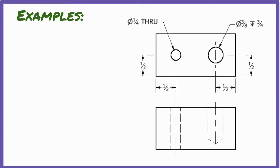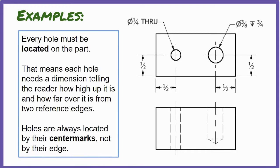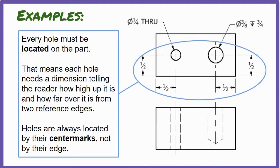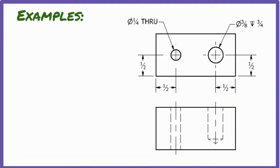Anytime a hole appears on a drawing, it needs a few dimensions. Holes typically need two dimensions to correctly locate them. These location dimensions tell the distance from a reference edge of the object to the hole's center. Manufacturers need to know where the center of the hole is in order to drill it in the right place, so locating a hole by its edge isn't very helpful.